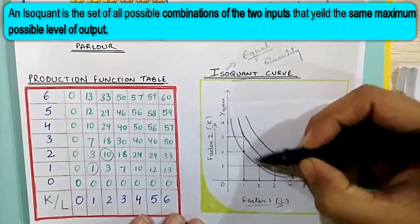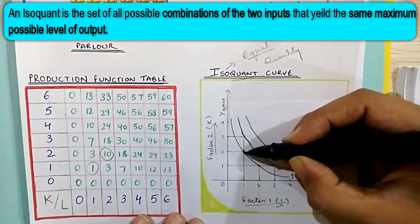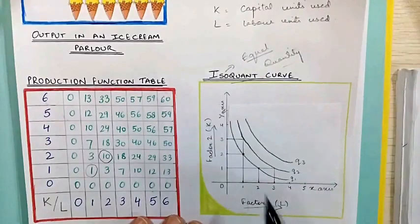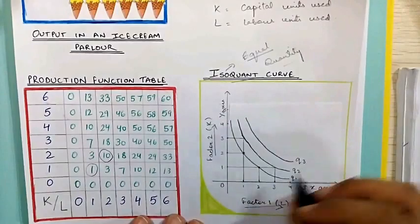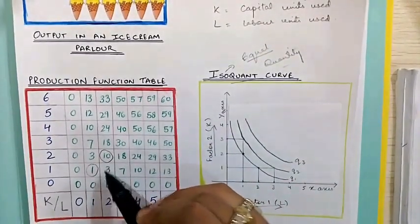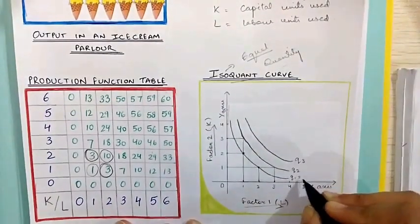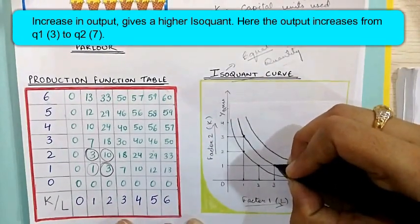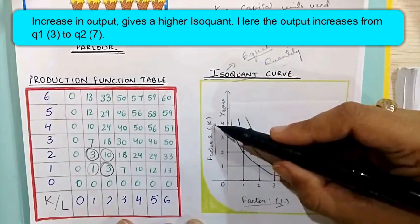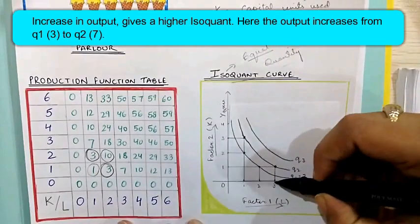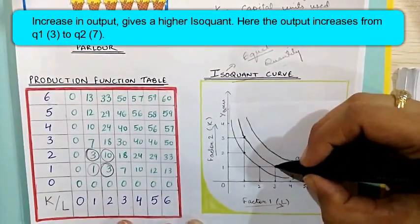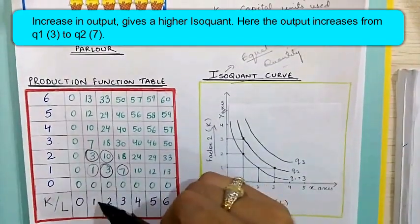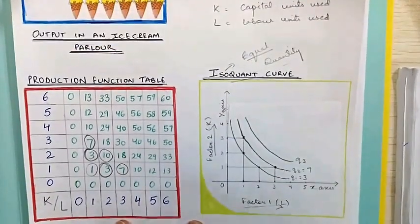An isoquant curve is a curve that shows the set of all possible combinations which yield the same maximum output. Looking at the first curve Q1, if we use two units of capital and one unit of labor, or two units of labor and one unit of capital, our output is three. Both sets are represented on this isoquant curve where Q1 = 3. In the second curve Q2, we have three units of capital and one unit of labor, or three units of labor and one unit of capital, producing an output of seven. So here Q2 = 7.